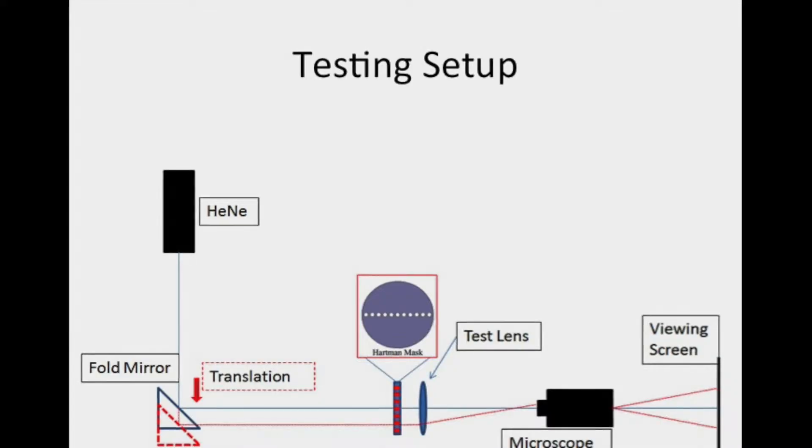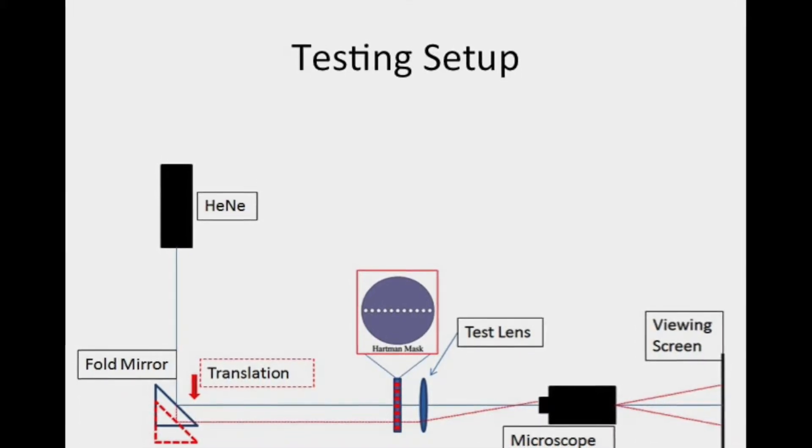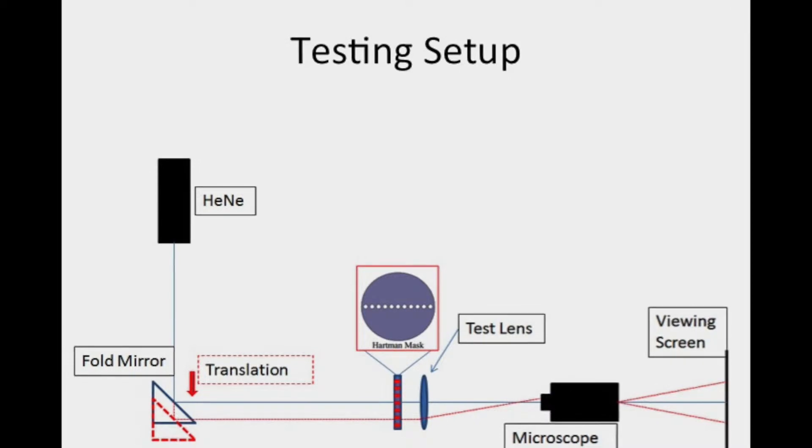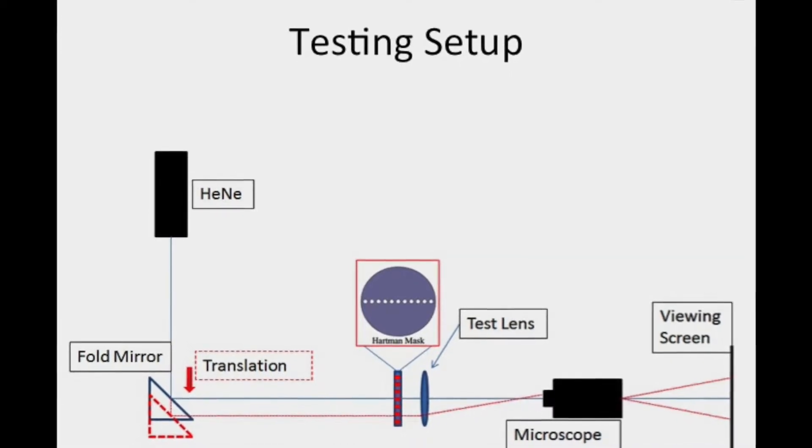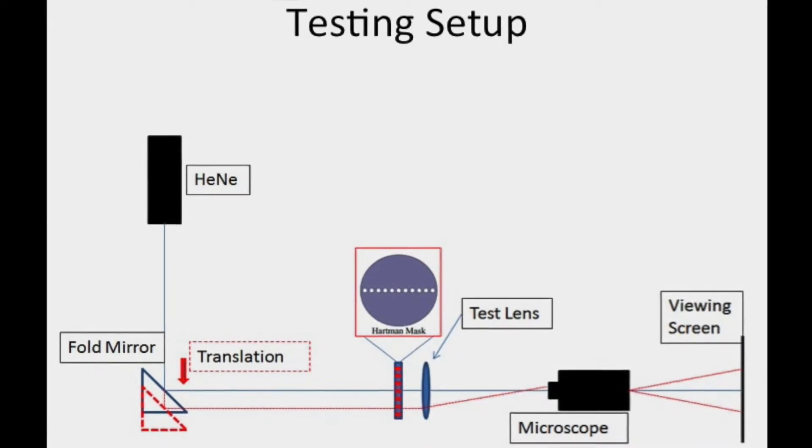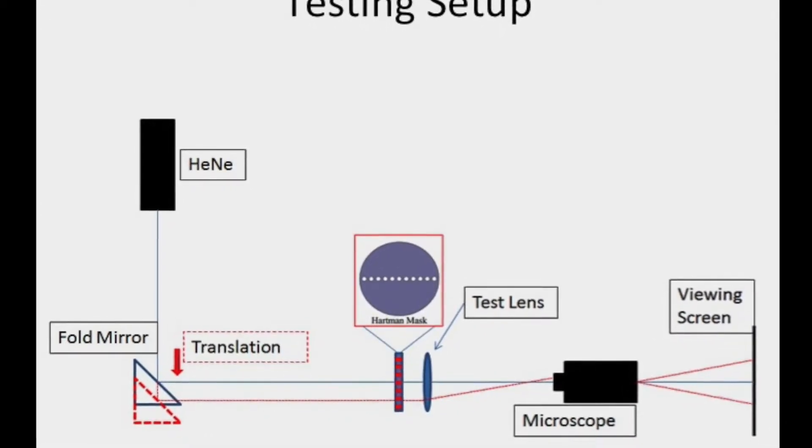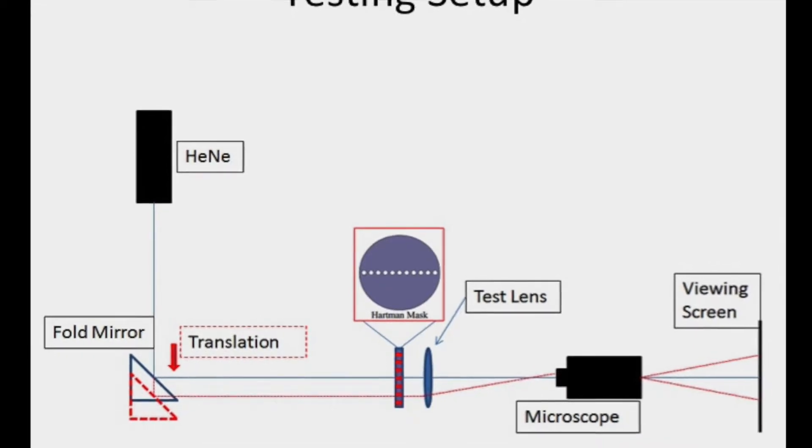Here you can see our test setup for determining the aberration in the lenses that we tested. It includes an aligned helium-neon laser, which is reflected off of a fold mirror on a translation stage, which directs the light through a Hartmann mask. This allows us to select a pupil location through the test lens to determine the marginal focus, which we can then use to determine the spherical aberration present in the lens, and plot that.